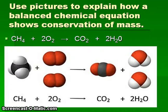This slide illustrates how pictures can be used to explain how a balanced chemical equation shows conservation of mass. For the balanced equation, we have methane CH4 plus oxygen O2 produces CO2, carbon dioxide, and H2O, which is water.